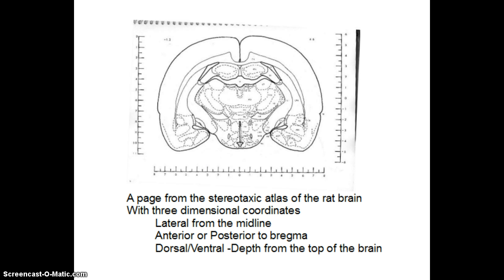In order to know where various structures are, we utilize the stereotaxic atlas of the rat brain. Here is just one page, and you can see you've got the three-dimensional coordinates that you would need to locate various structures — lateral from the midline, how far out are we going to go?